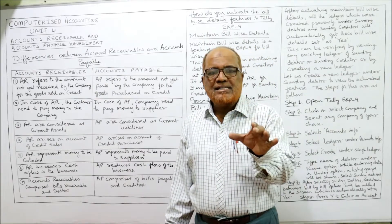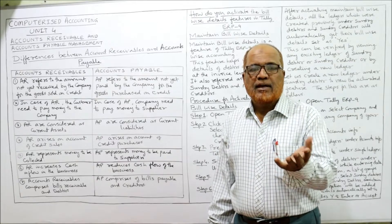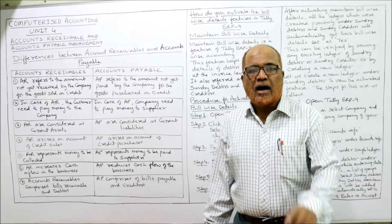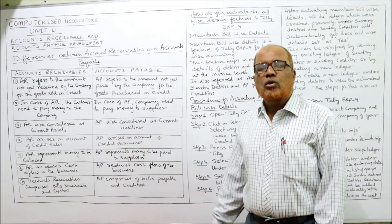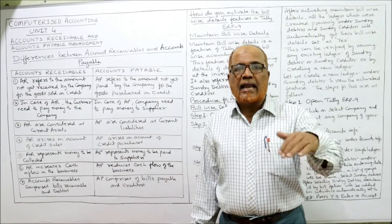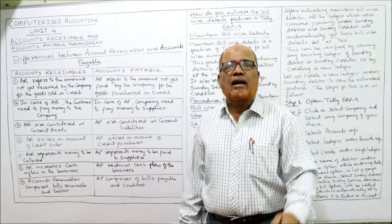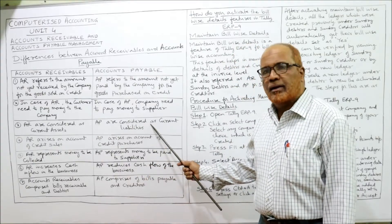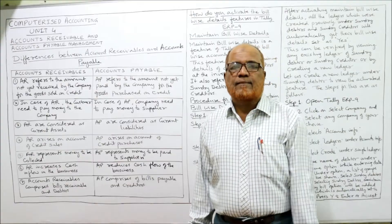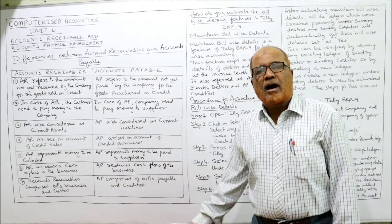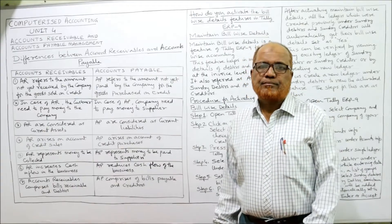Accounts receivable are considered current assets — in the balance sheet, on the asset side under current assets, we place accounts receivable. Whereas accounts payable is a current liability — on the liability side under current liabilities. Accounts receivable arises from credit sales, whereas accounts payable arises from credit purchases.